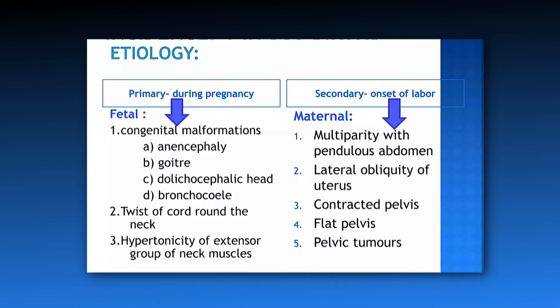Fetal causes include congenital malformations such as anencephaly, goiter, dolichocephaly, and brachycephaly. The second fetal cause is twisting of the cord around the neck. The third is hypertonicity of the extensor group of neck muscles.